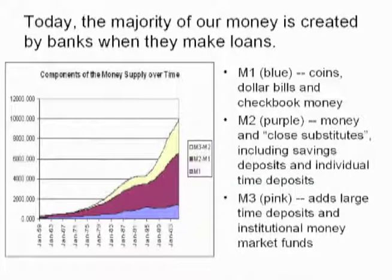M1 is what we normally think of as money: coins, dollar bills, and checkbook money — that's the blue line at the bottom. Coins and dollar bills only come about halfway up that blue line. So you can see that most of the money supply comes from somewhere else. M2 is the circulating money supply that we, the people, actually get to use.